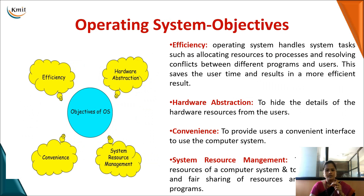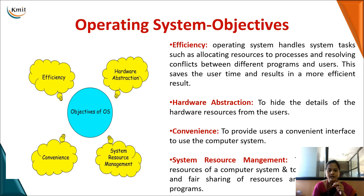Now we have seen what is an operating system. Now what are the basic objectives of an operating system? The first and foremost important objective is efficiency — you are using an operating system and you want the users to work efficiently by providing services from the operating system. And you want all the tasks to be done by the user based on the interface he is using. Similarly, when I go for hardware abstraction — for example, we put a paper in the printer and give the option to print; when I click print, I get the output printed on paper.